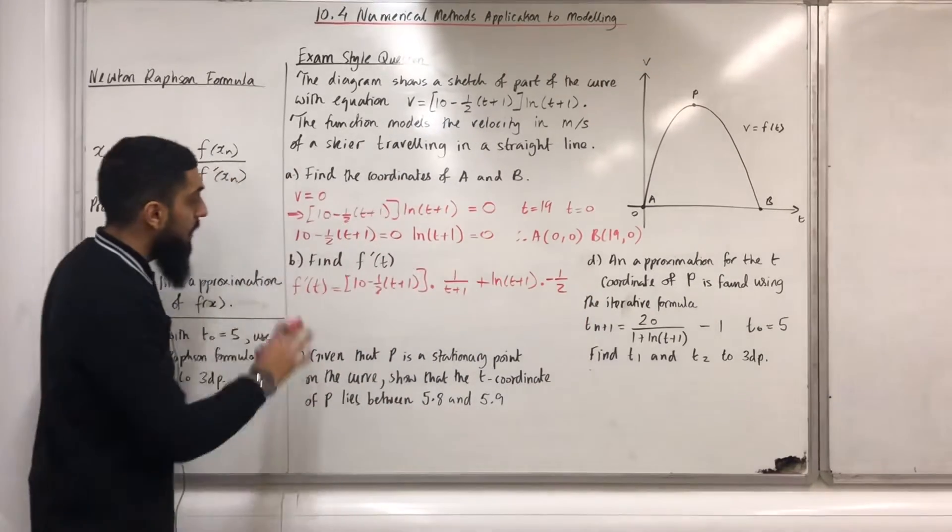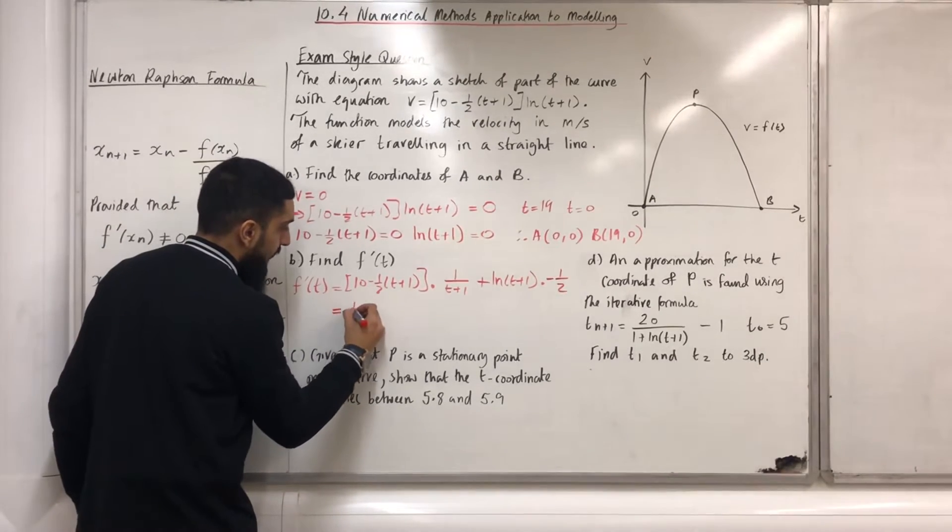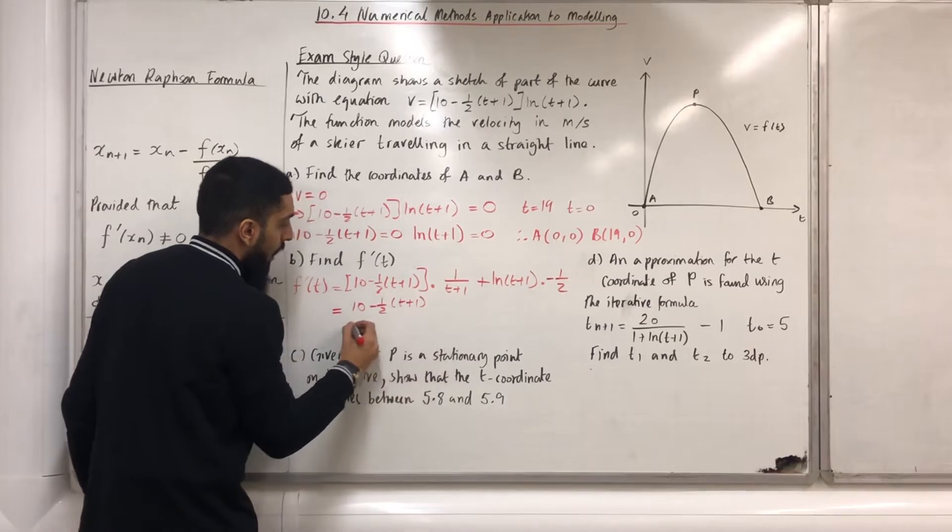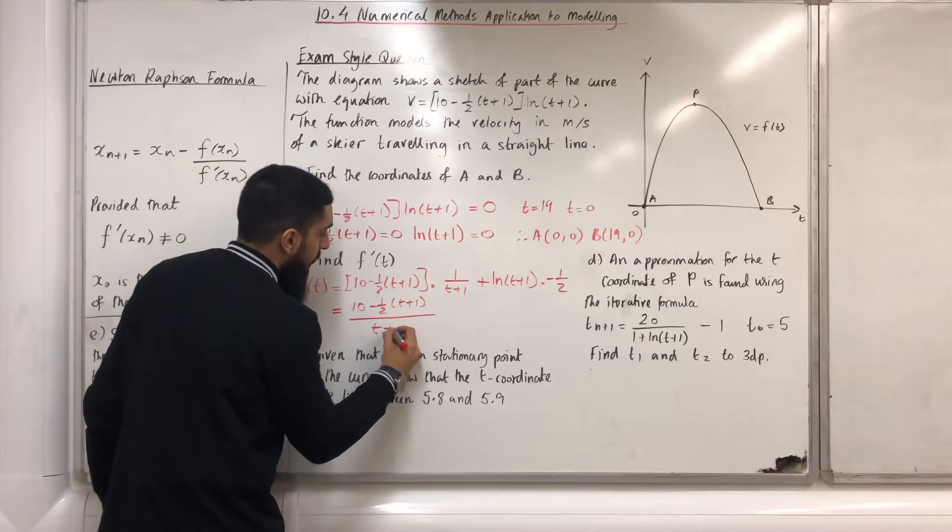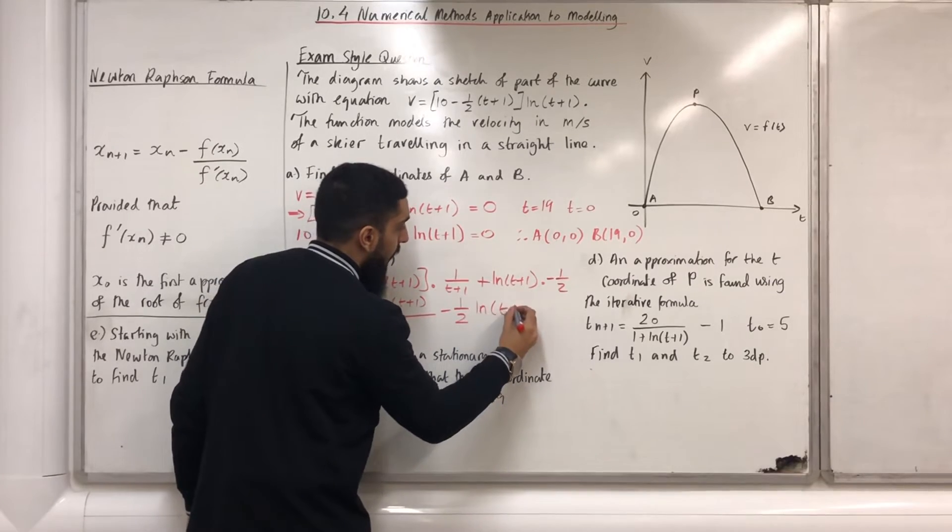I can now simplify f'(t) to give me the following result: [10 - 0.5(t+1)]/(t+1) - 0.5ln(t+1).